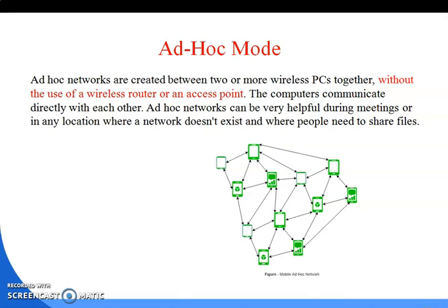In the ad hoc network there is no administration, no setup, and no cost. Each node can directly communicate with another, like a peer-to-peer architecture. Nodes can only communicate if they reach each other physically or if other nodes can forward the message.